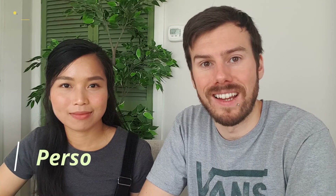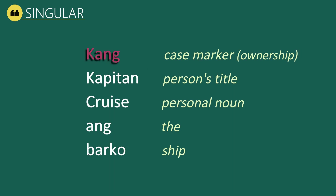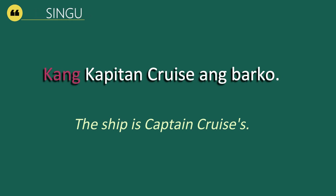We're going to move on to our next section now, which is person's titles. Our first example is: Kang Kapitan Cruz ang barco, which means 'The ship is Captain Cruz's.' This is singular form. Kang is the case marker of ownership, Kapitan Cruz is the title and name, ang means 'the,' and barco means ship.